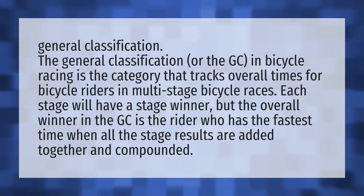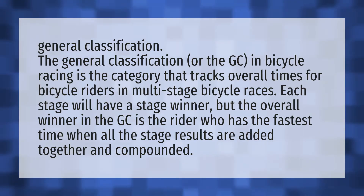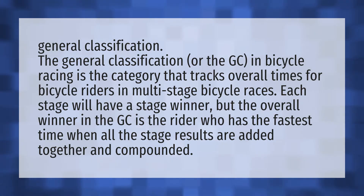General classification. The general classification, or the GC in bicycle racing, is the category that tracks overall times for bicycle riders in multi-stage bicycle races. Each stage will have a stage winner, but the overall winner in the GC is the rider who has the fastest time when all the stage results are added together and compounded.